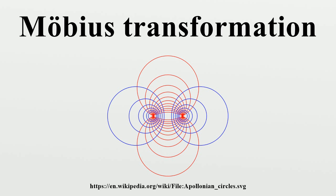Möbius transformations map generalized circles to generalized circles, since circle inversion has this property. A generalized circle is either a circle or a line, the latter being considered as a circle through the point at infinity. Note that a Möbius transformation does not necessarily map circles to circles and lines to lines — it can mix the two, and even if it maps a circle to another circle, it does not necessarily map the first circle's center to the second circle's center. Cross ratios are invariant under Möbius transformations: if a Möbius transformation maps four distinct points to four distinct points respectively, the cross ratio of four different points is real if and only if there is a line or circle passing through them, which is another way to show that Möbius transformations preserve generalized circles.